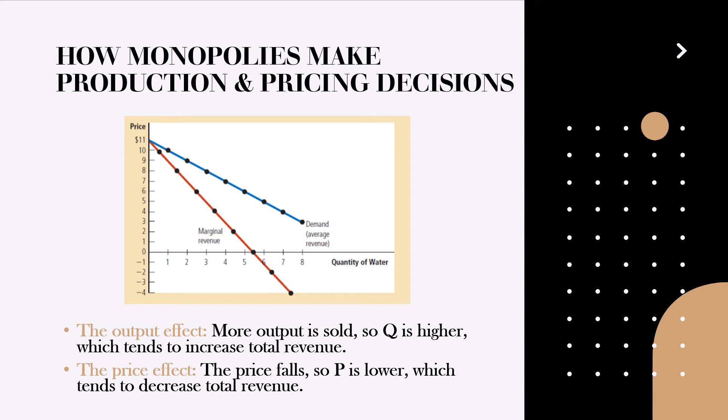The output effect which is more output is sold, which tends to increase total revenue. And the second is the price effect, which is the price falls, which tends to decrease the total revenue. So at the point at which one of these effects outweighs the other, the total revenue changes its trend.